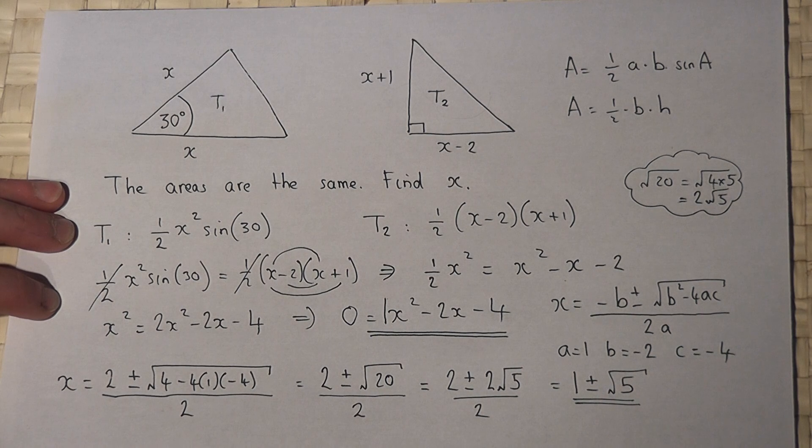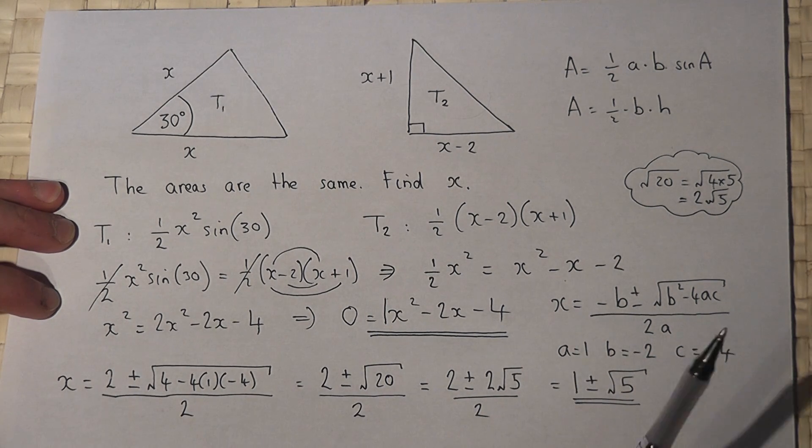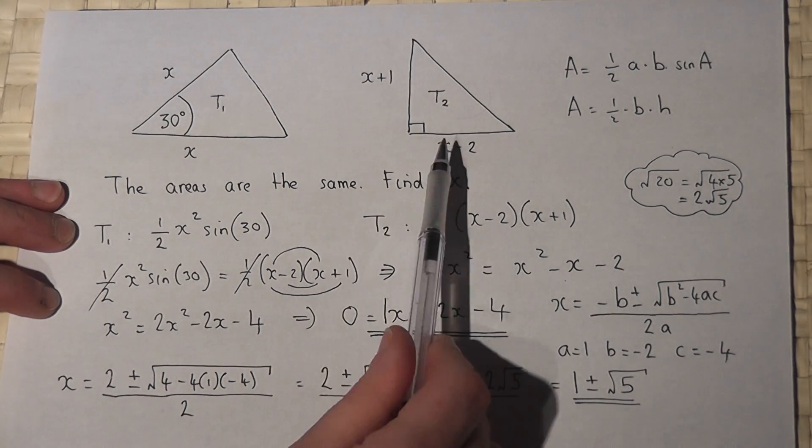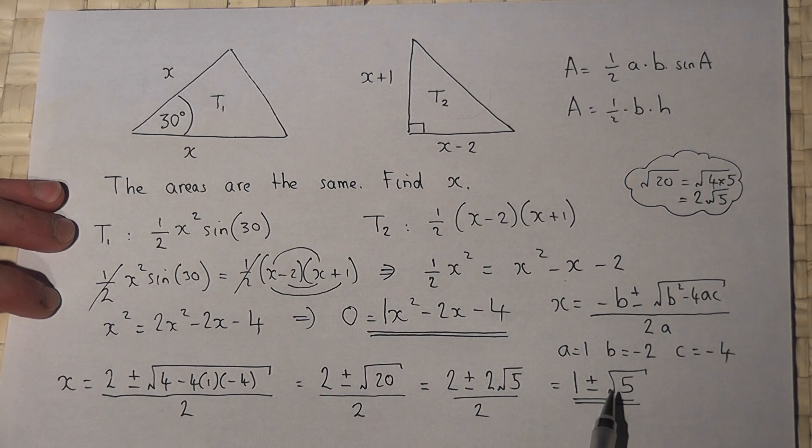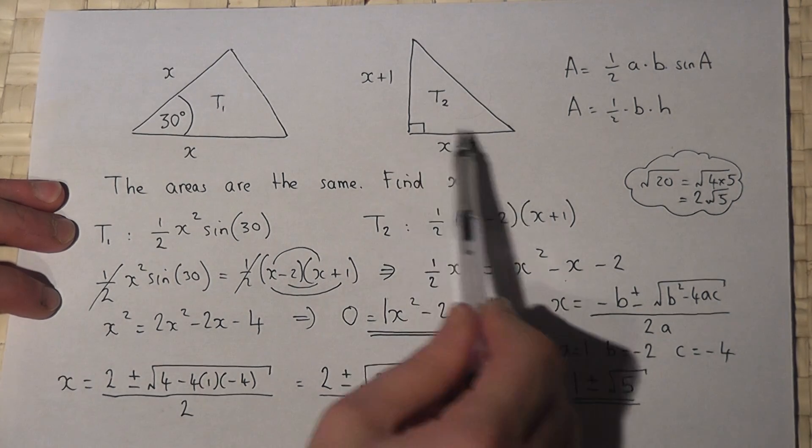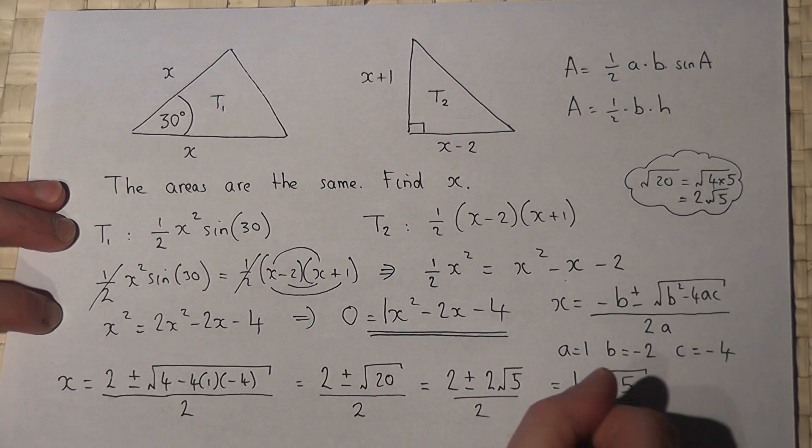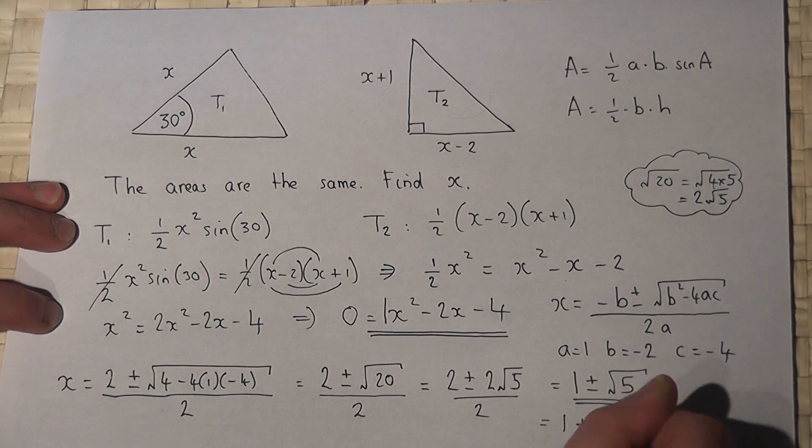So x has got two options: 1 plus or minus root 5. However, because these sides must be positive, if x is 1 minus root 5, then this side becomes negative which we can't have. So therefore we'll just take the positive solution as our answer: 1 plus root 5.